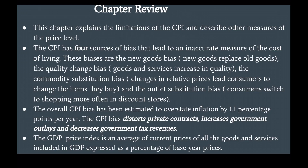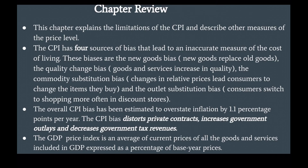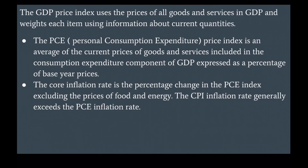The GDP price index is an average of current prices of all the goods and services included in GDP, expressed as a percentage of base year prices. The GDP price index uses the prices of all goods and services in GDP and weights each item using information about current quantities.